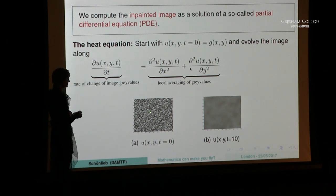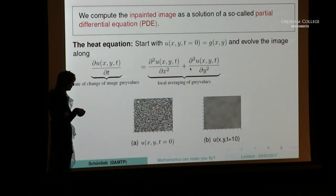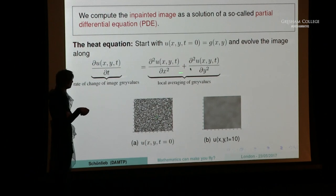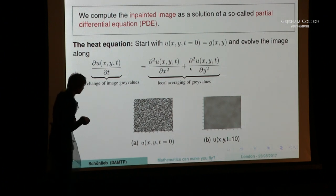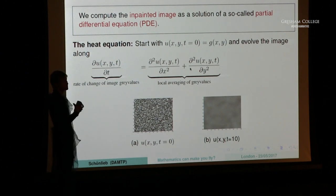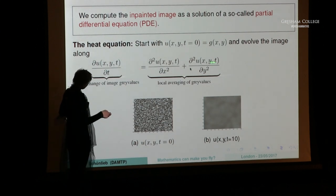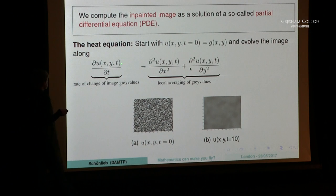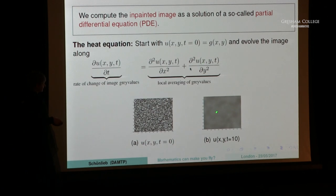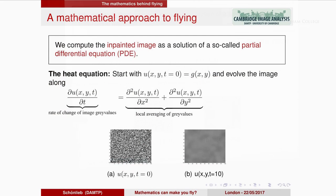Think about the following: you're having your afternoon tea and you pour milk into the tea. What you see is that the milk diffuses into the tea — and this is what this equation is modeling. When we apply this to an image — starting with an image of random intensities — and evolve it along the heat equation up to time t equals 10, you see exactly this diffusion process, which you can think of as a local averaging happening to the pixels. The heat equation relates the evolution of u to the flux of the spatial gradient of u, performing this averaging process.